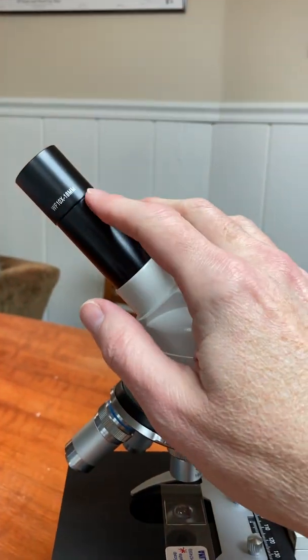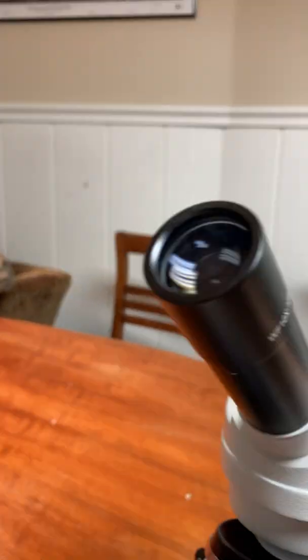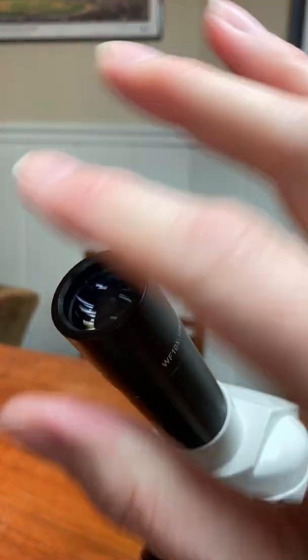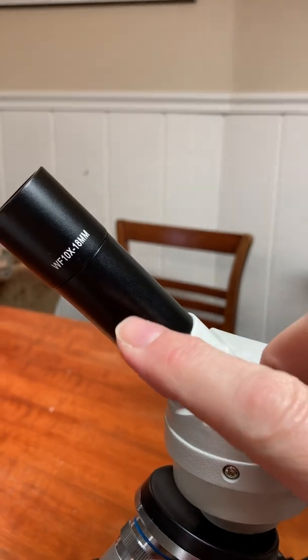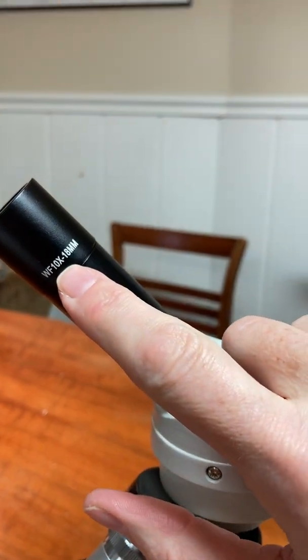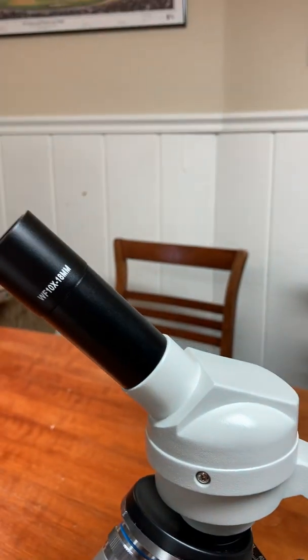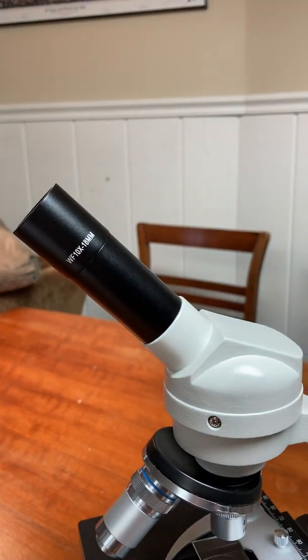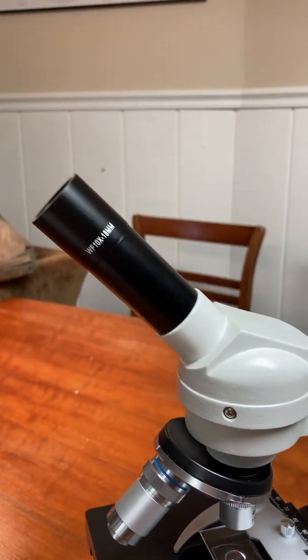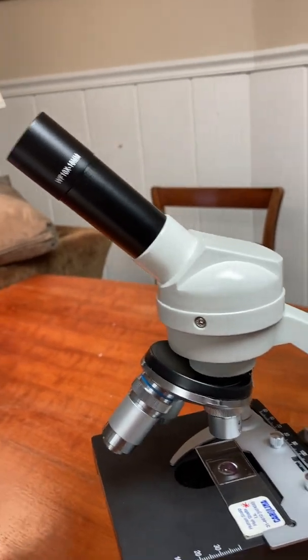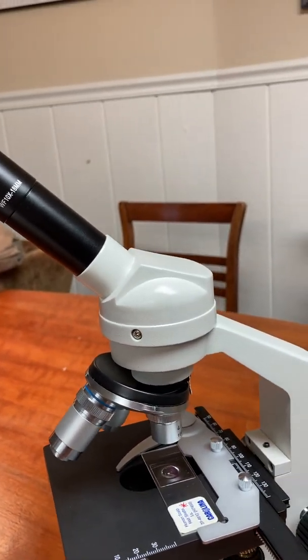This is the ocular lens. And ocular means eye and it's the lens that you put your eye up against. Notice that it has writing on it right there. And the important letters are 10x. That means that this microscope lens has a power of 10, a magnification power of 10. It magnifies the specimen 10 times. X is times.